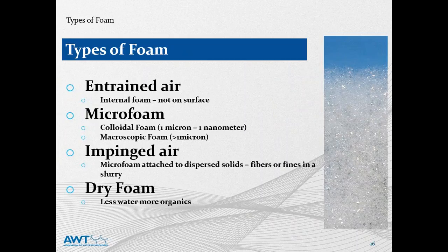There are four main categories of foam. The first is entrained air — taking it back to the stereotypical example, a pint of freshly poured Guinness is a great example; the foam is pronounced and actually in the liquid. Microfoam is simply tiny bubbles. Impinged air is foam created when solids attach themselves to bubbles — in water treatment we actually use impinged air to our advantage in a DAF system, a dissolved air flotation unit, where solids attach to bubbles and float to the top. The last type is dry foam, which is the most difficult to address because there's not a lot of water to disperse it. This is often found in biological systems.